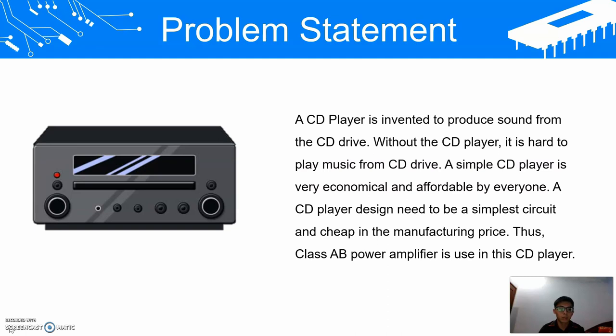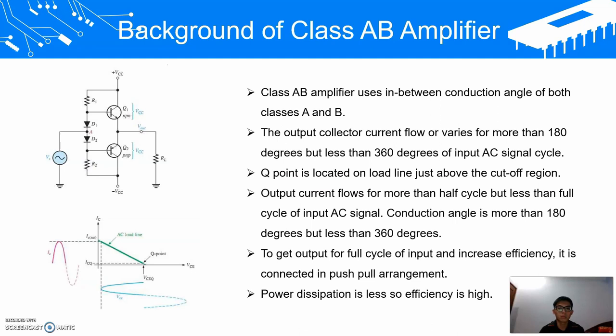This is the background of the Class AB amplifier. A Class AB amplifier uses a conduction angle between that of Class A and Class B. The output collector current flows for more than 180 degrees but less than 360 degrees of the input AC signal cycle. The Q point is located on the load line just above the cutoff region. Output current flows for more than half a cycle but less than a full cycle. It is connected in a push-pull arrangement to get output for a full cycle and increase efficiency, resulting in less power dissipation and high efficiency.